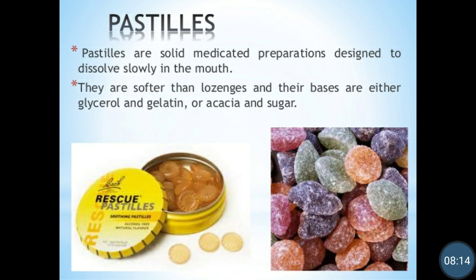The next type are pastilles. Pastilles are also similar to lozenges but they are softer. Pastilles are solid medicated preparations designed to dissolve slowly in the mouth, the same as lozenges. They are not taken with water. They are softer than lozenges and their bases are either glycerol and gelatin, or acacia and sugar. They have a jelly-like consistency — they are jelly-like tablets made up of gelatin and glycerol or acacia and sugar, and are also chewed in the mouth.